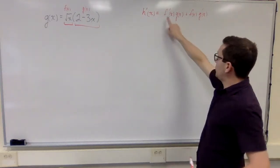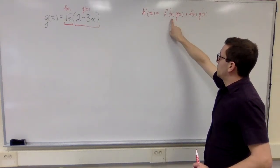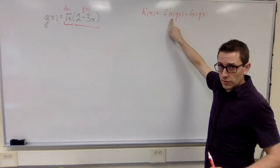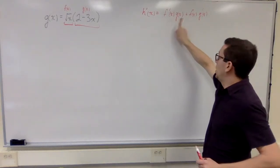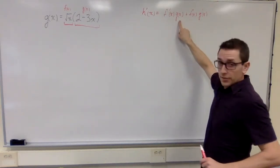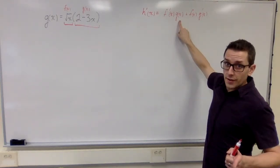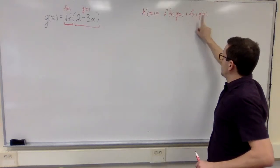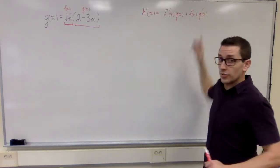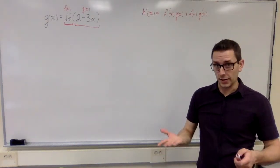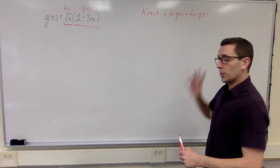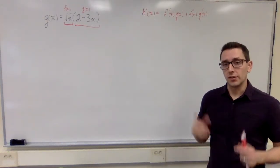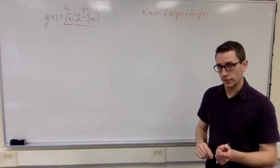What I can do is find the derivative of the first function, f of x, multiply by the second function, g of x, then add the first function times the derivative of the second. That's the process I'm going to take to find the derivative of this function.